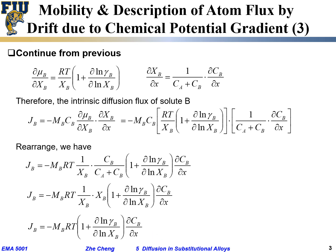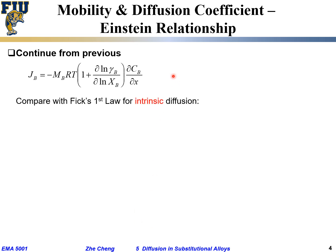Comparing this with Fick's first law for intrinsic diffusion — where J_b equals the intrinsic diffusion coefficient D_b times the concentration gradient — we get the relationship between D_b (the intrinsic diffusion coefficient) and M_b (the mobility for the same species). D_b intrinsic equals M_b times RT times (1 + ∂ln(γ_b)/∂ln(x_b)).